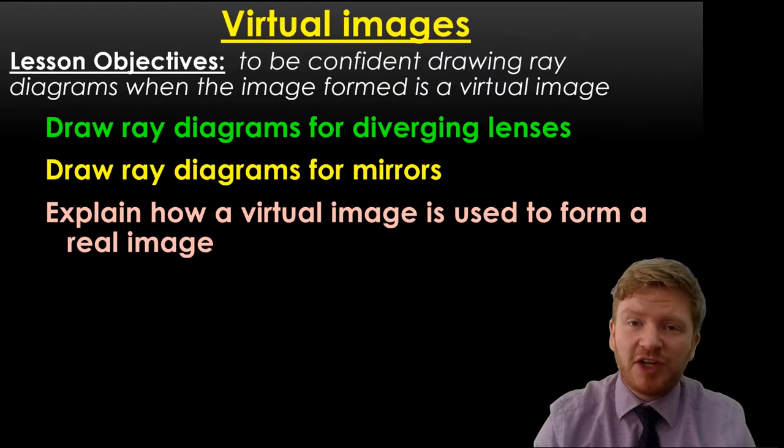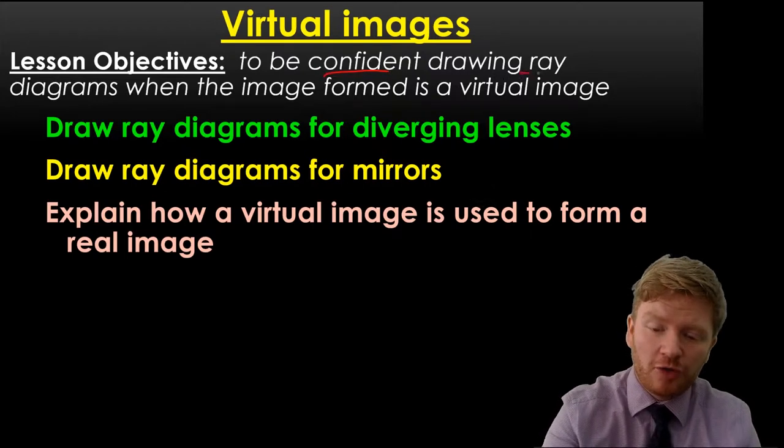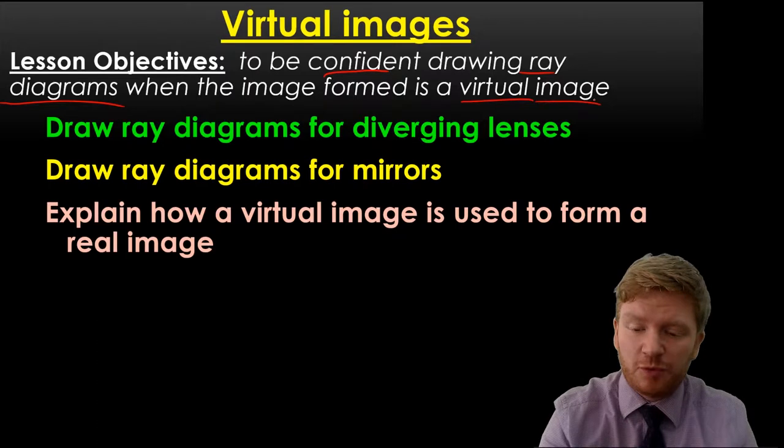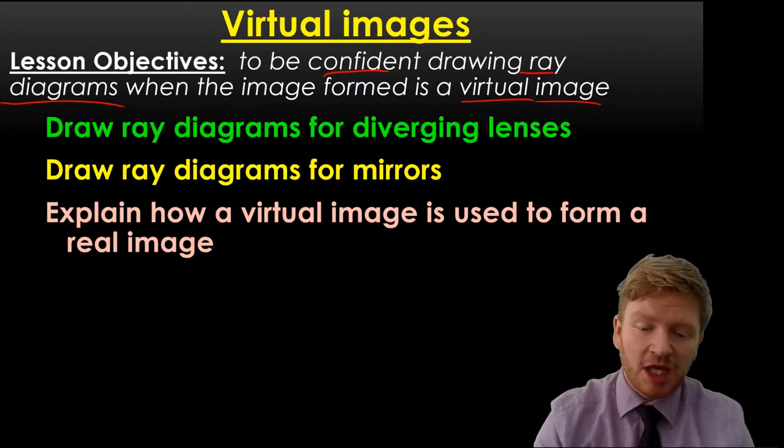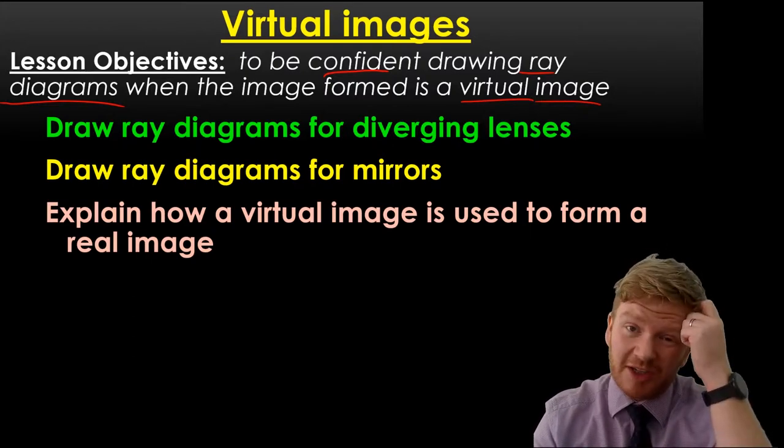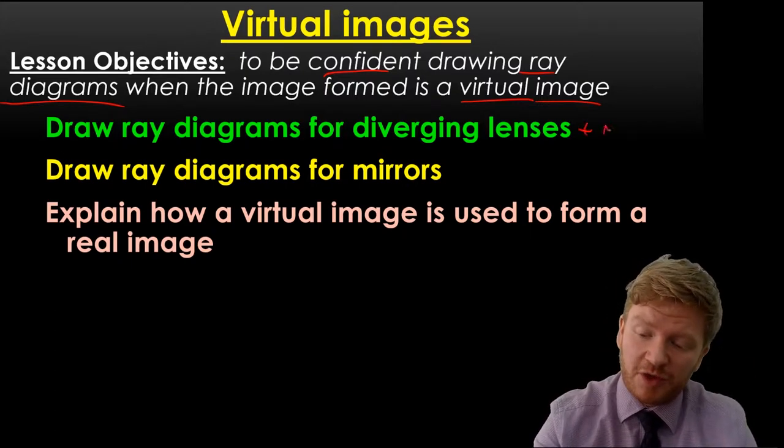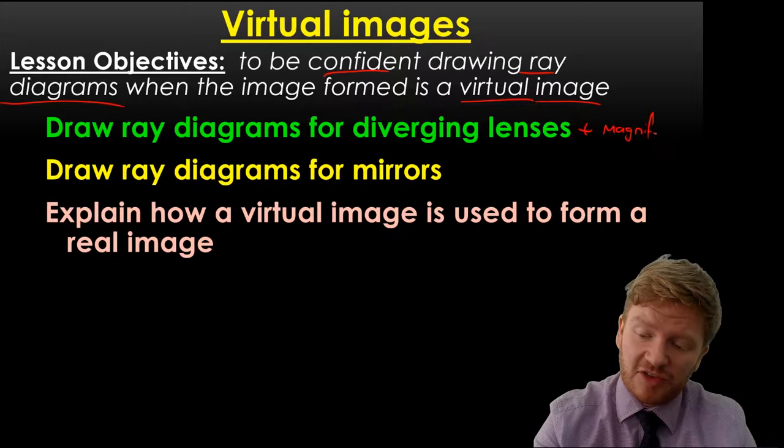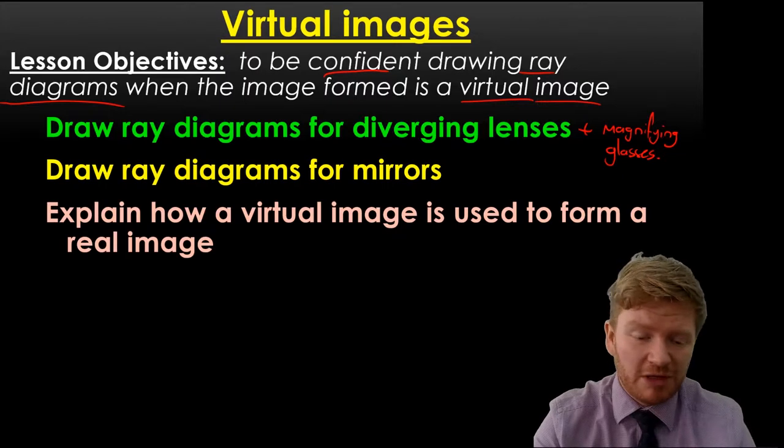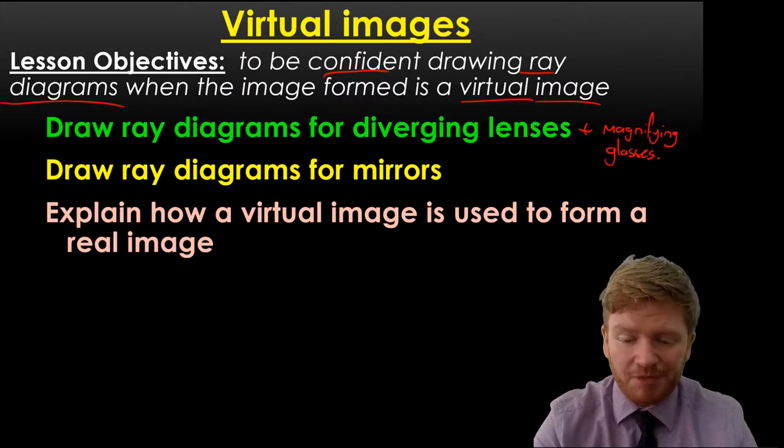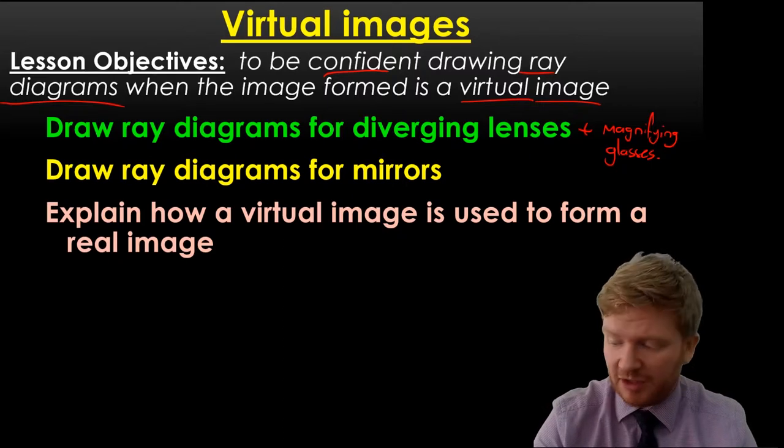What we're going to focus on in this final lecture is the idea of virtual images. So you need to be confident with drawing ray diagrams for images forming a virtual image. If you remember, a virtual image is one that appears to be inside the lens. There are two main or three main ways that you might come across this. The first is diverging lenses and magnifying glasses. But you should also be confident with how to do them for mirrors, and you should also be able to explain how we can form virtual images from real images.